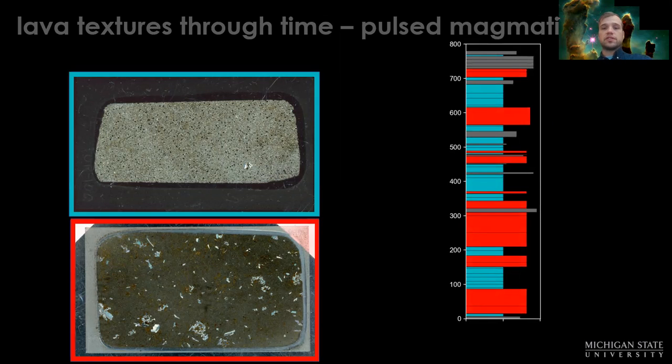You'll notice on the right-hand side here in the stratigraphic column that each lava texture tends to occur as packages of lavas in these groups. This pattern of alternating apheric and crystal-rich lavas has been interpreted from other flood basalt provinces as being the result of pulsed magmatism, where a pulse begins with crystal-rich stuff and then tails off into these apheric lavas.